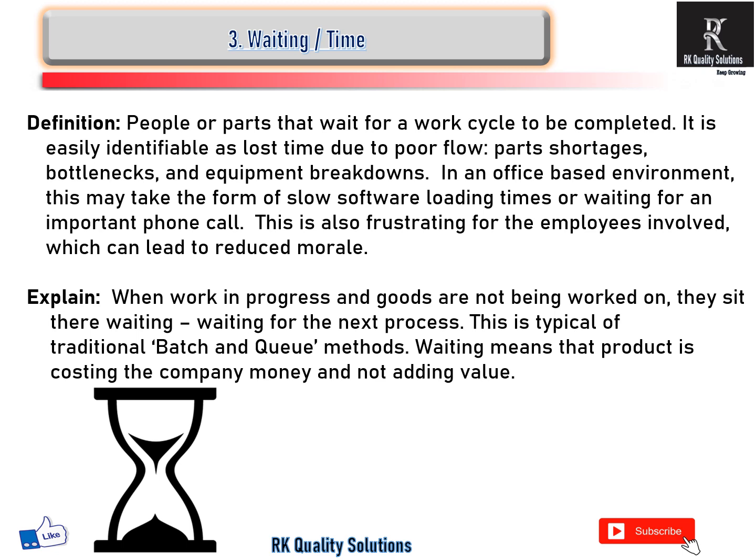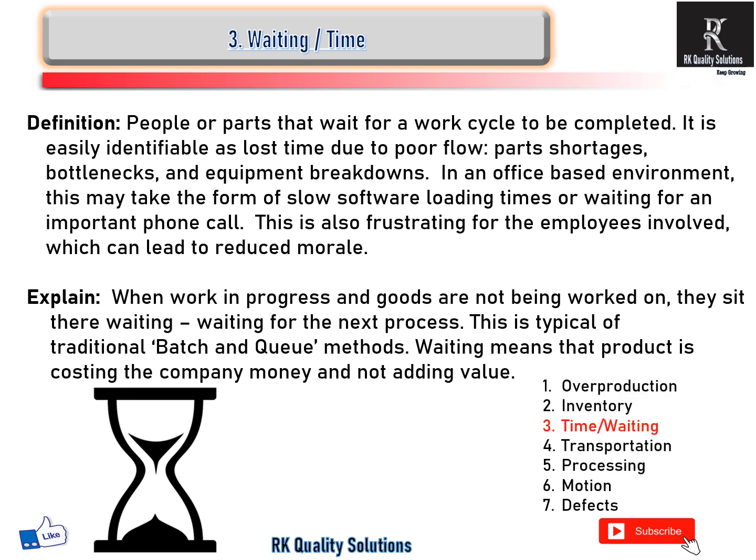Third is waiting. Parts that wait for a work cycle to be completed. It is easy to identify as lost uptime due to poor flow. When work in process and machines are not beginning work, employees and workers sit waiting for the next process. Waiting means the product is costing the company money and not adding value. Wait means time loss, and time loss equals waste.